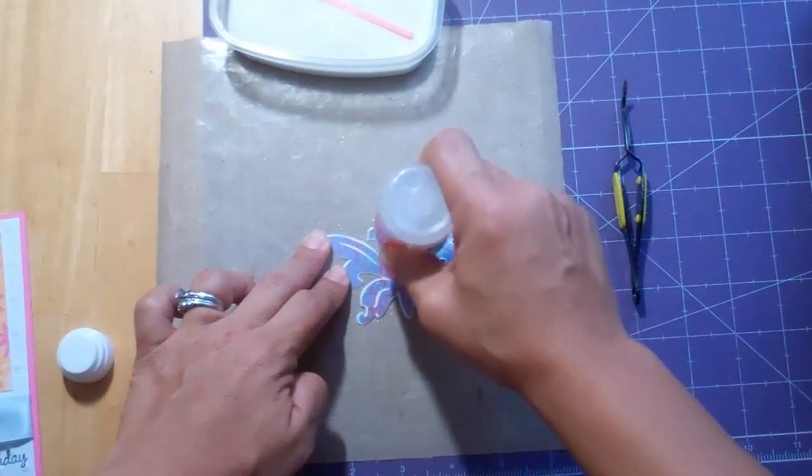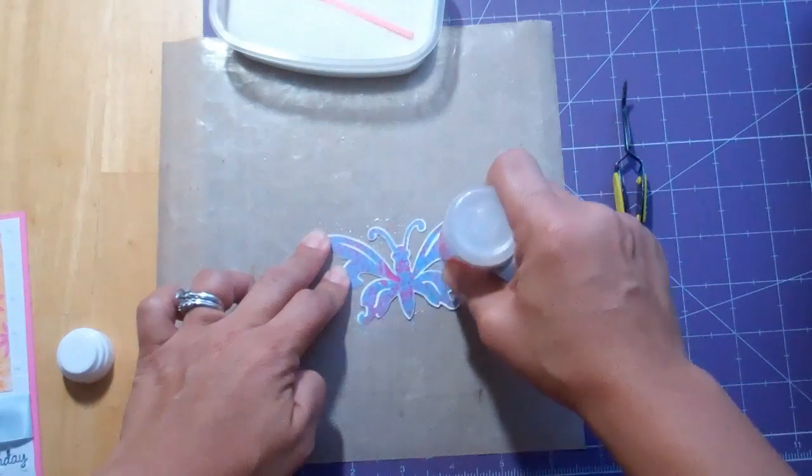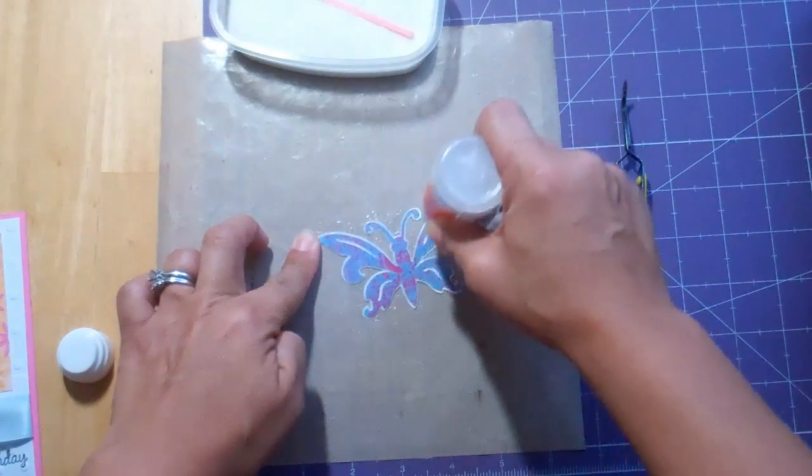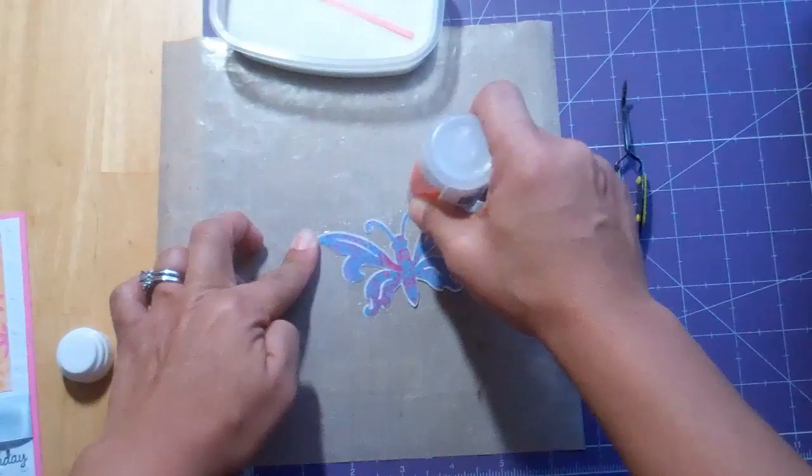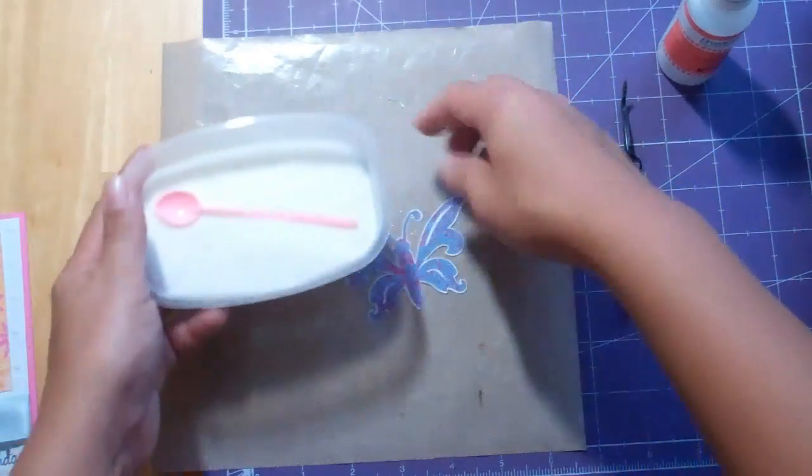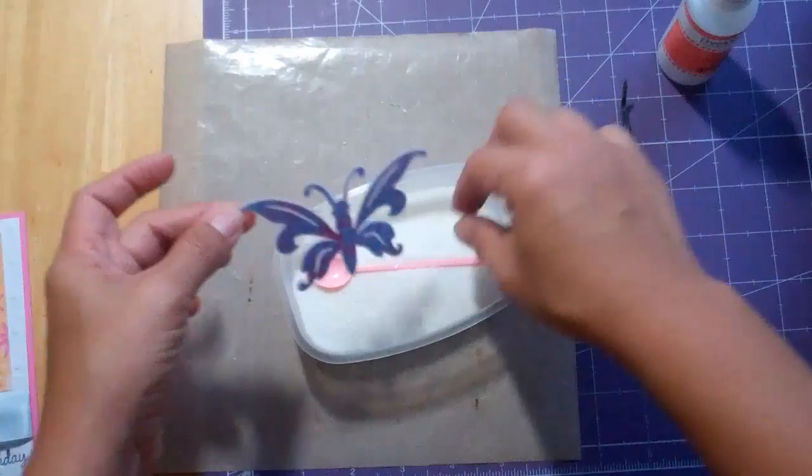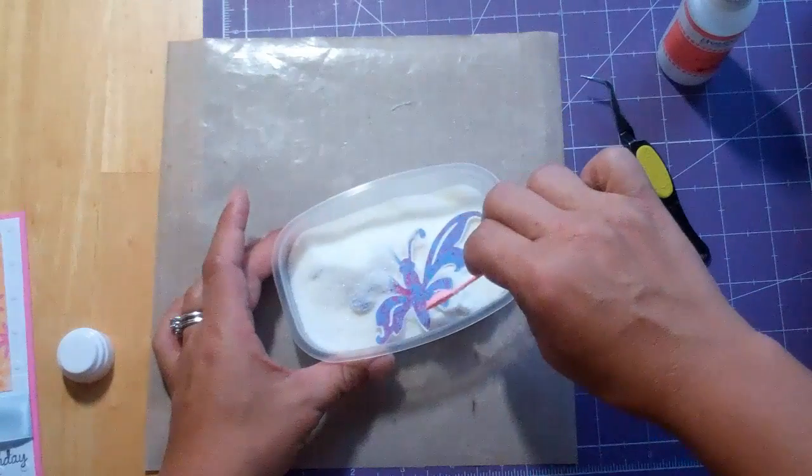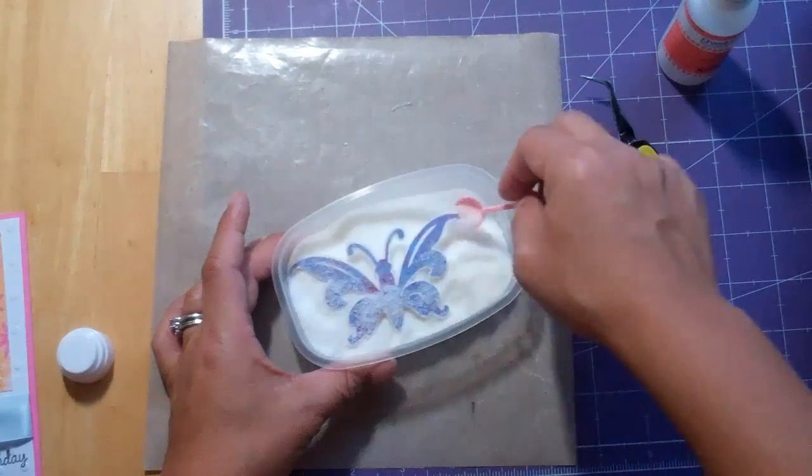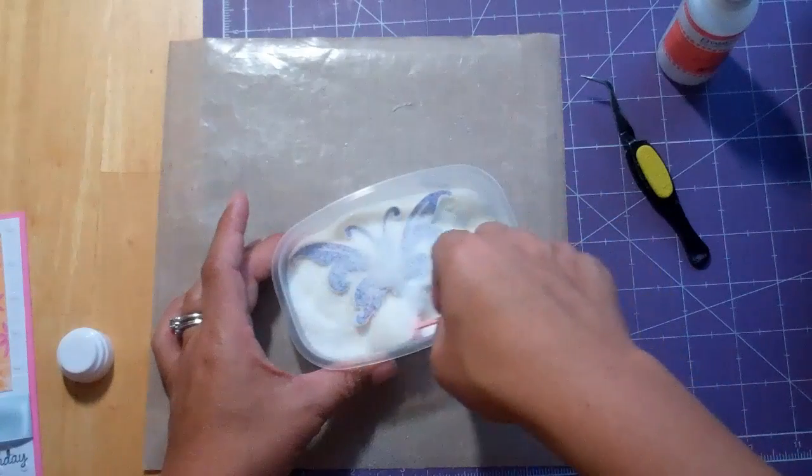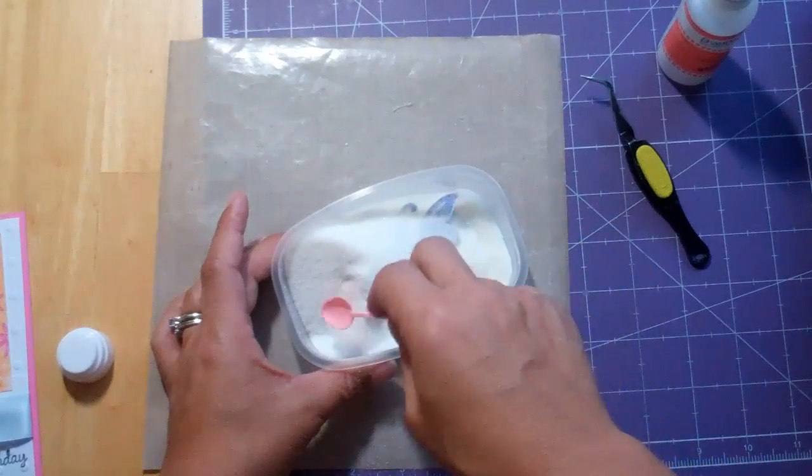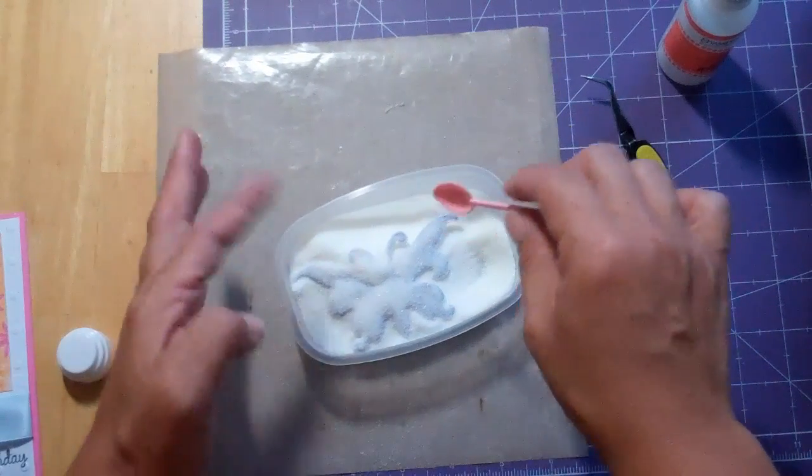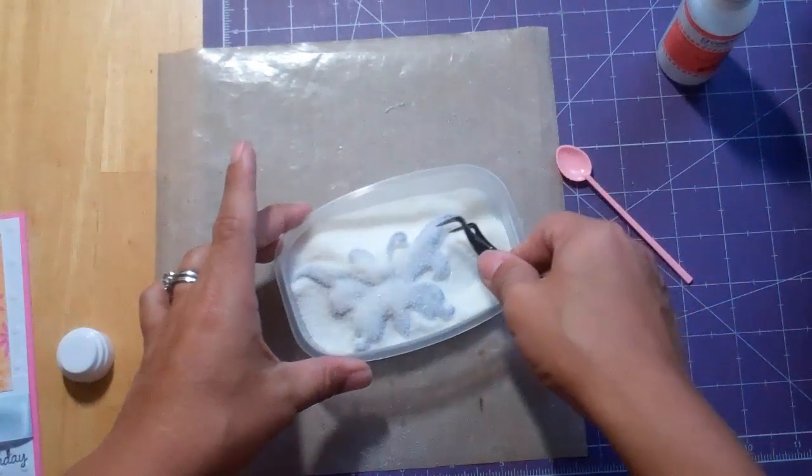It's basically embossing ink like what's in Versamark ink pad or any other embossing pad that you might use, but it's in a bottle so you can apply it pretty thickly. I'm making a mess, this is a pretty messy process. The heat gun blows the stuff everywhere, did you see that? I'm just really getting messy today.